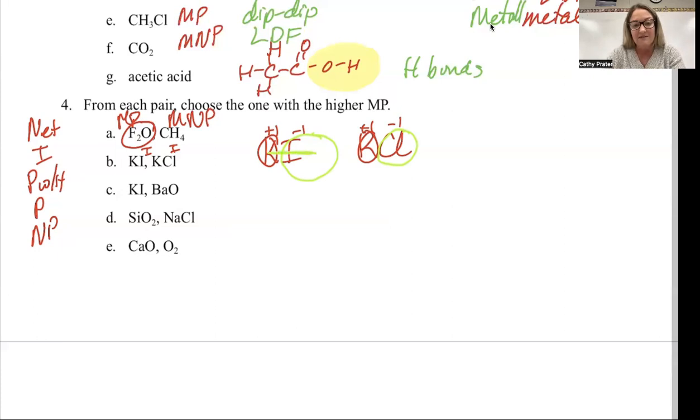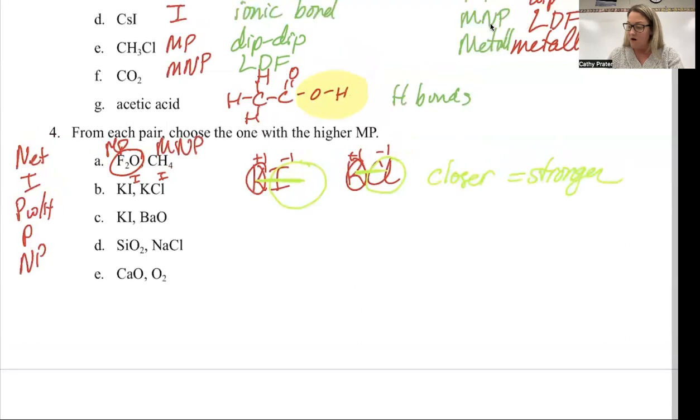As a result, these two atoms, K and I, are farther apart than K and Cl. K and Cl are closer. When we have a smaller ion and it's closer together, it's going to give us a stronger ionic force. Therefore, KCl will be my answer.